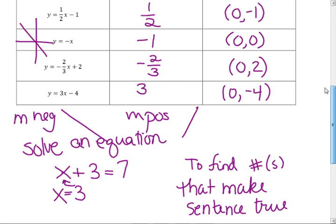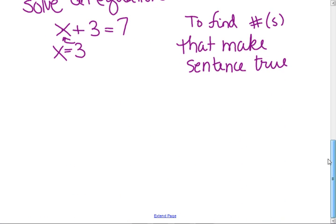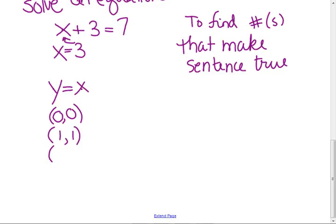So when I graph these — y equals x, let's take an easy one — what number or numbers make that true? What can you put in for x, and what would you put in for y so that these would be equal? If I put in x equals 0, what's y? 0. If I put x equals 1, what's y? 1. How about 1 half? 1 half. Can I list all the numbers that make that true?